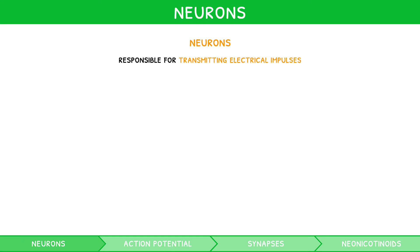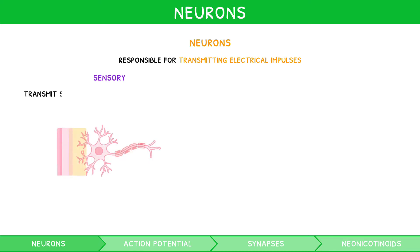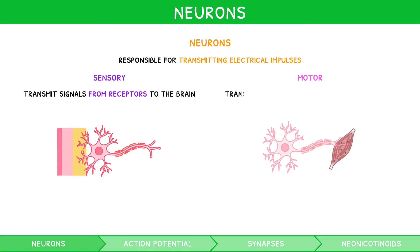Neurons are generally classified as sensory, which transmits signals from receptors — structures that detect stimuli — to the brain, or motor, which transmits signals from the brain to effectors, structures that carry out responses.